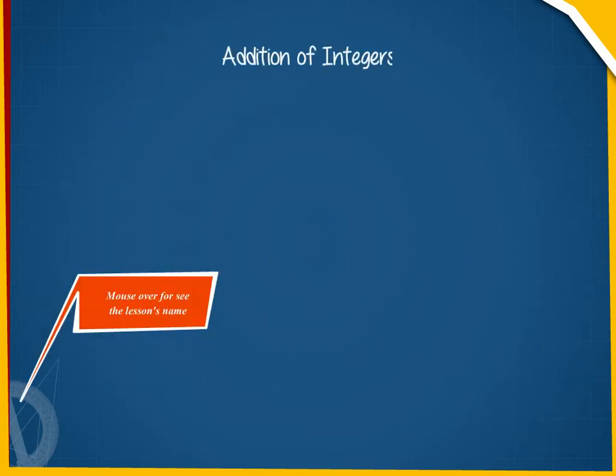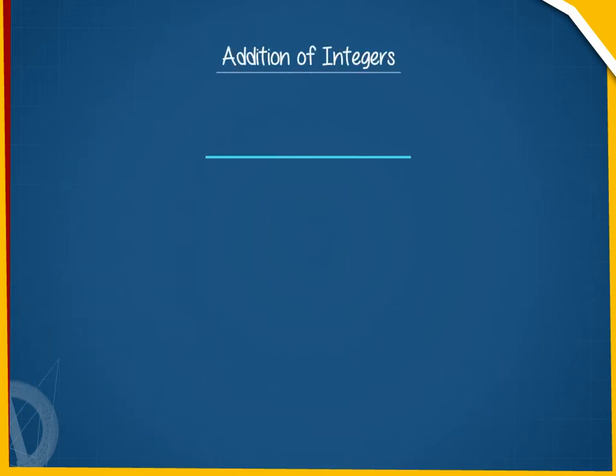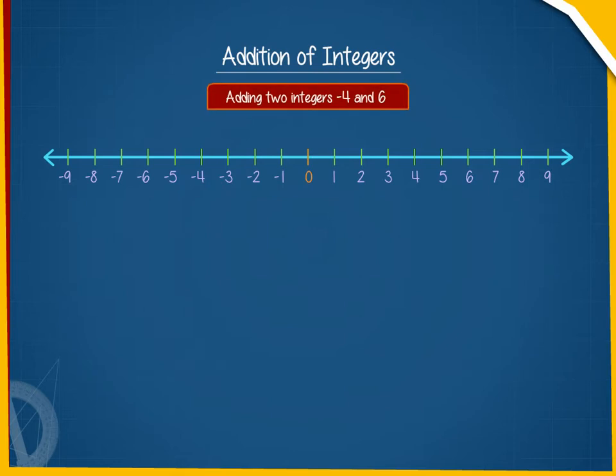Addition of Integers. We can add two integers easily with the help of a number line. Suppose we want to add two integers, minus 4 and 6.